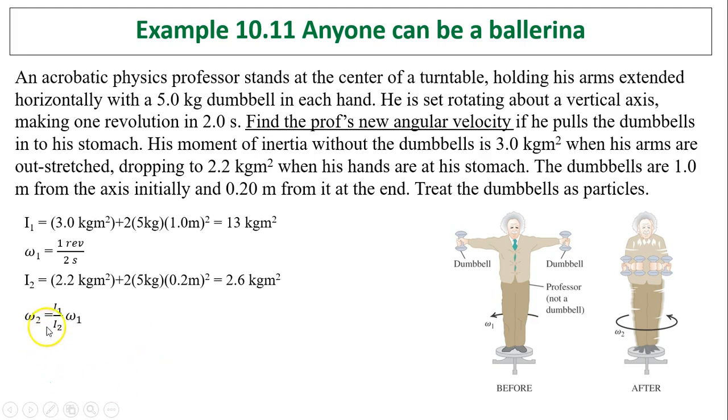What is his spinning rate? So omega 2 equals I1 over I2 times omega 1 because angular momentum is conserved. Omega 2 equals 2.5 revolutions per second. By the way, you don't have to change revolutions per second to radians per second. Revolution per second is fine.